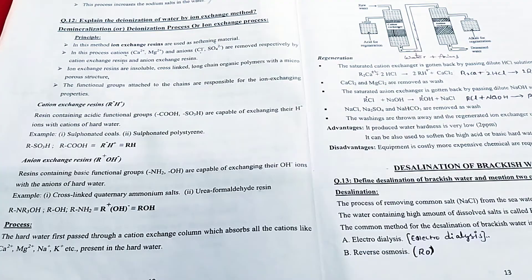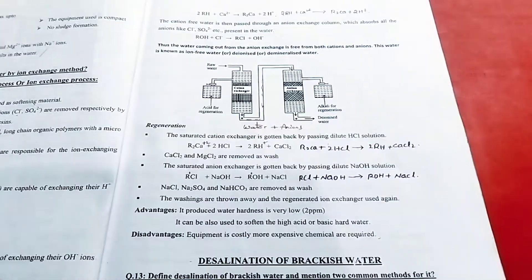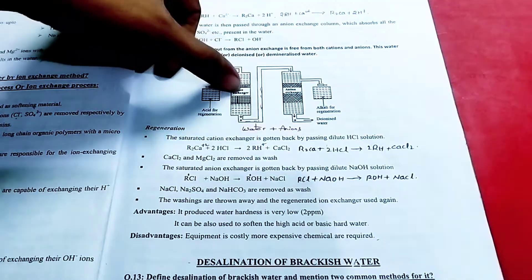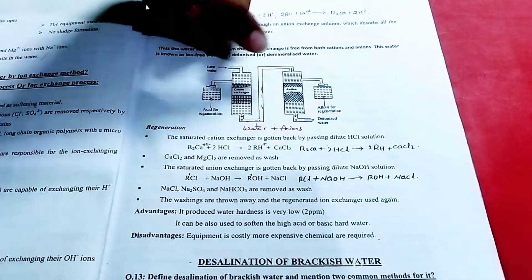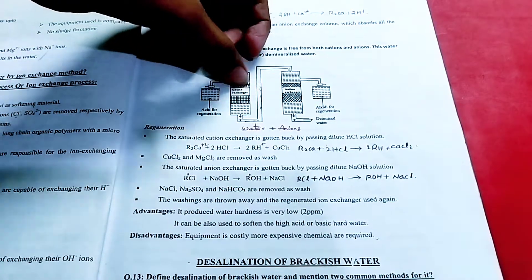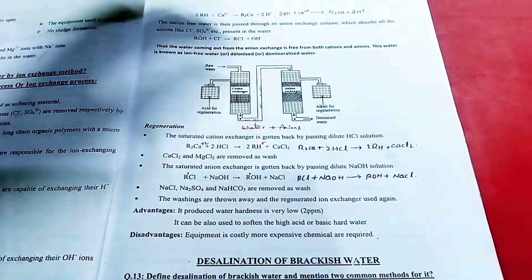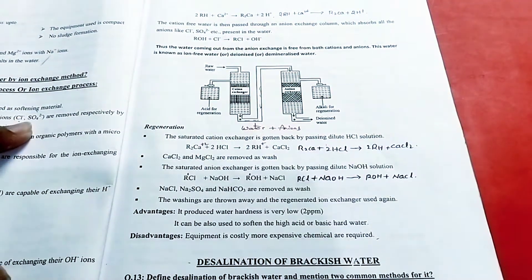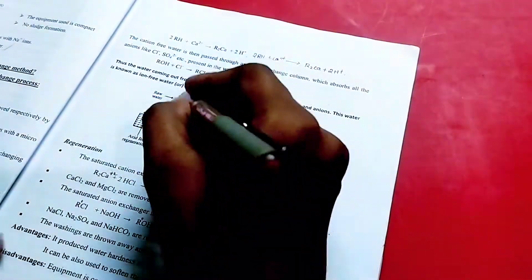In this cation exchange resin, we have a resin bed. In the cation section, you can take the cations from the cation exchange resin section. This is how the cation exchange resin works.